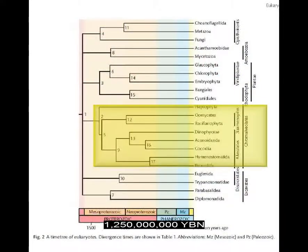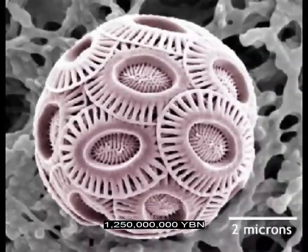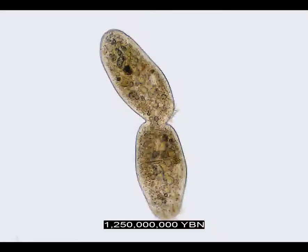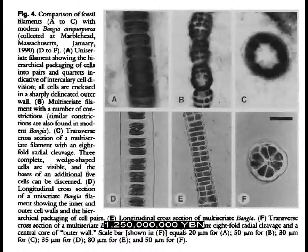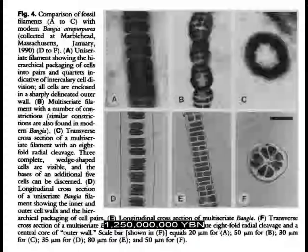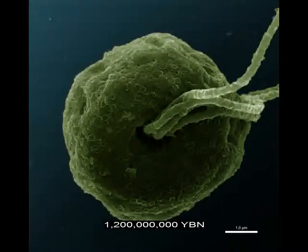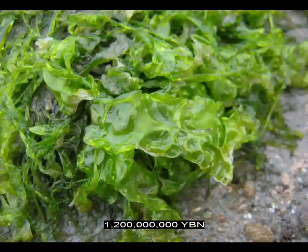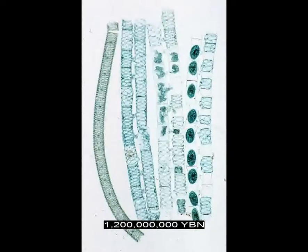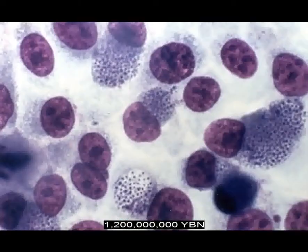Protists chromalveolids — ancestor of chromista, cryptophytes, haptophytes, and straminopiles and alveolids. Earliest certain eukaryote fossils and eukaryote filamentous multicellularity: Rhodophyta, red algae fossils. Mitosis of diploid cells evolves. Plant green algae evolves: Chlorophyta — Volvox and sea lettuce — and Chlorophyta Spirogyra. First fungi — this begins the fungi kingdom. Like animals, fungi are heterotrophic, cannot photosynthesize, and must feed on other living things.